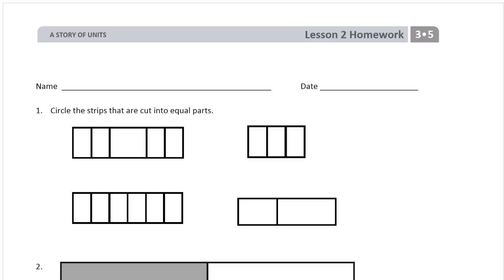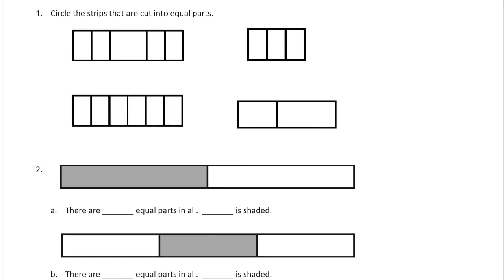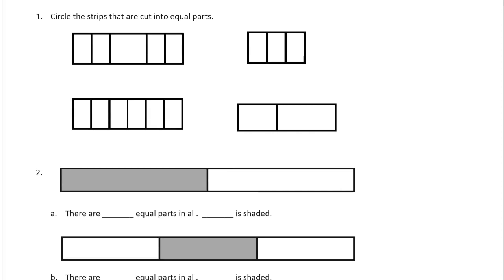This is the homework for Lesson 2, Module 5 of Grade 3. Please write your name here first. We're looking for strips that are cut into equal parts, and we're going to circle them.